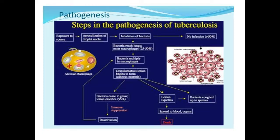Let us now see the pathogenesis of tuberculosis. Tuberculosis is a droplet infection. When a person inhales the infected droplets, the bacteria mixed with the droplet will reach the lung. In the alveoli, the alveolar macrophages will engulf those bacteria. But the macrophages will not be able to digest the bacteria, and the tubercular bacteria will multiply inside the macrophages.